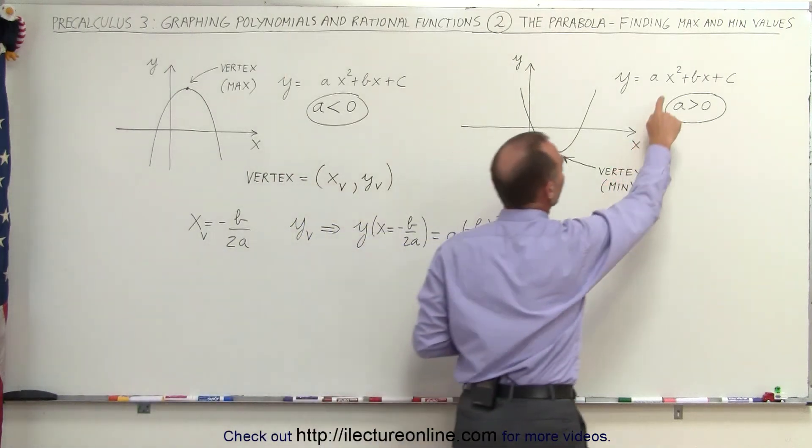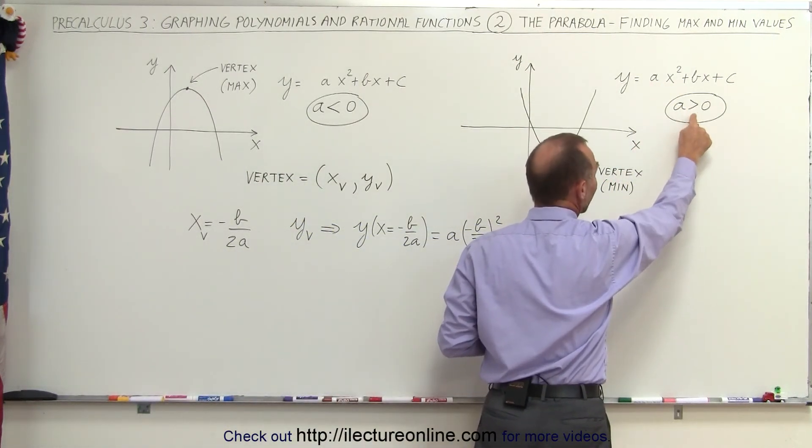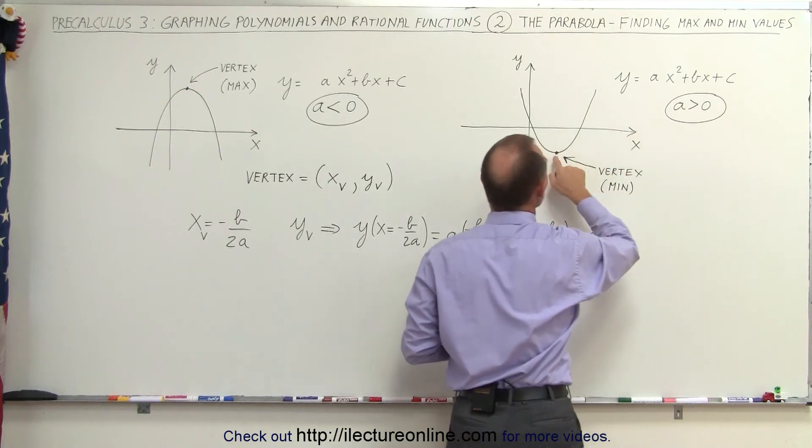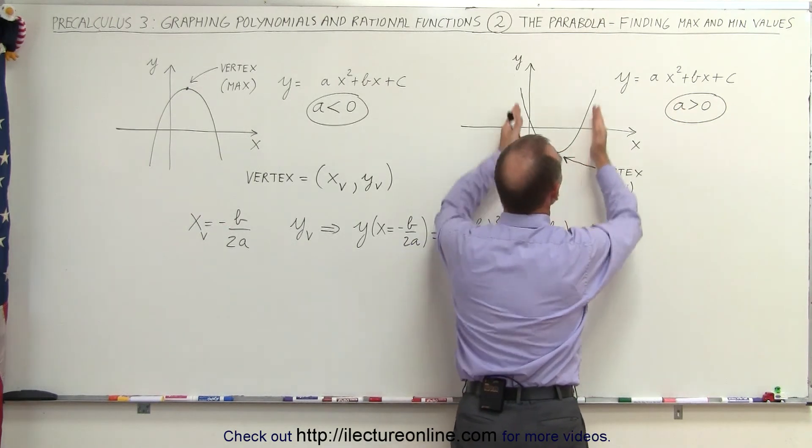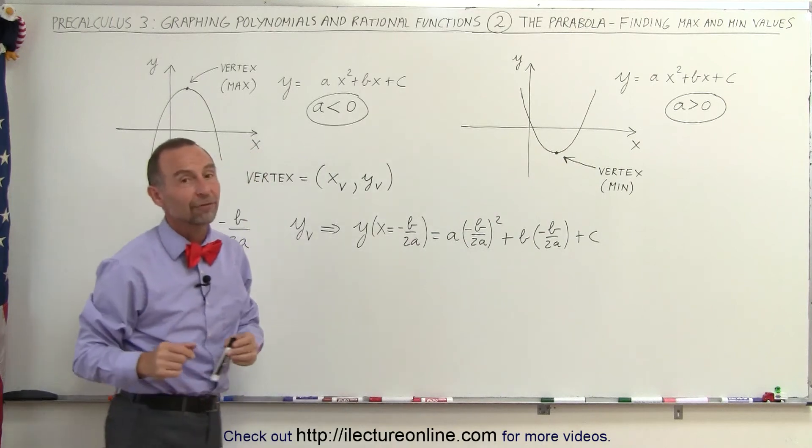If the coefficient in front of the first term, the a here from the x squared, is a positive value greater than zero, then we know that the vertex must be a minimum value because we know the parabola opens upward, and that's how we know the difference.